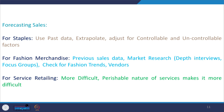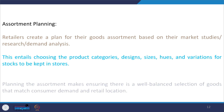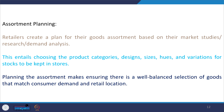Once demand forecasting is done, you move ahead with assortment planning. Assortment planning takes account of two factors: variety — the various kinds of product categories in which the retailer deals — and depth of the assortment, which looks at the number of stock keeping units offered to customers within a particular product category.